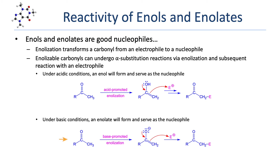Under basic conditions, an enolate will form and serve as the nucleophile. In the example, we see the same ketone enolized to give an enolate. Just as before, the pi bond of the enolate attacks an electrophile, resulting in alpha substitution. The negative charge makes an enolate a considerably stronger nucleophile than an enol, and most of the reactions that involve enolization utilize enolates rather than enols.